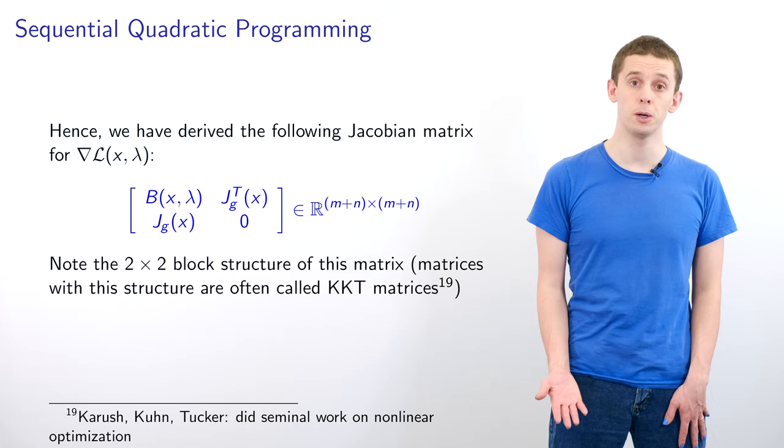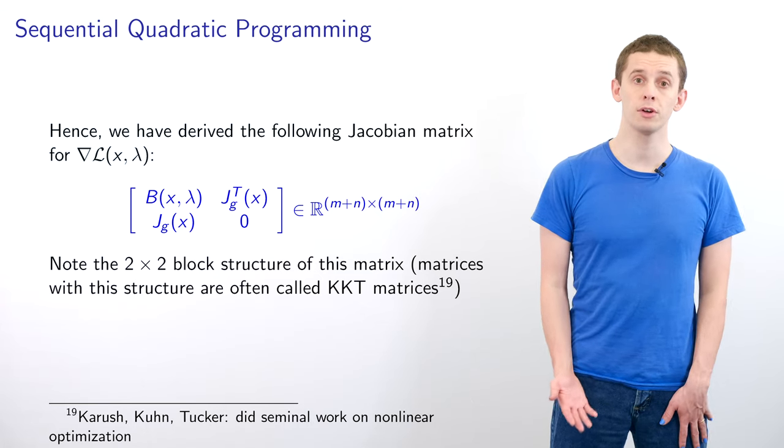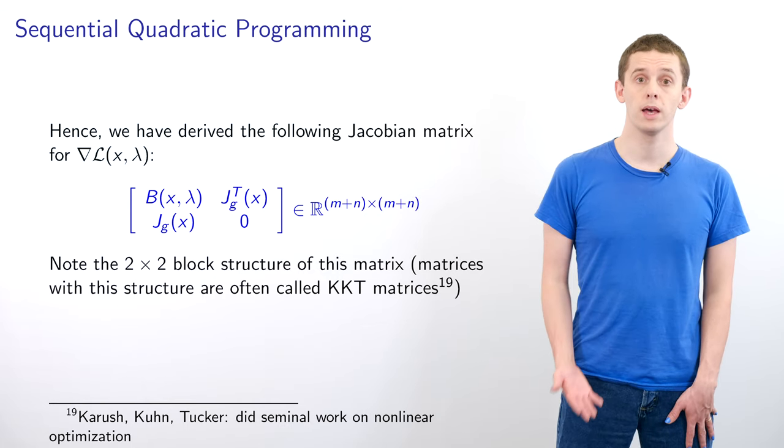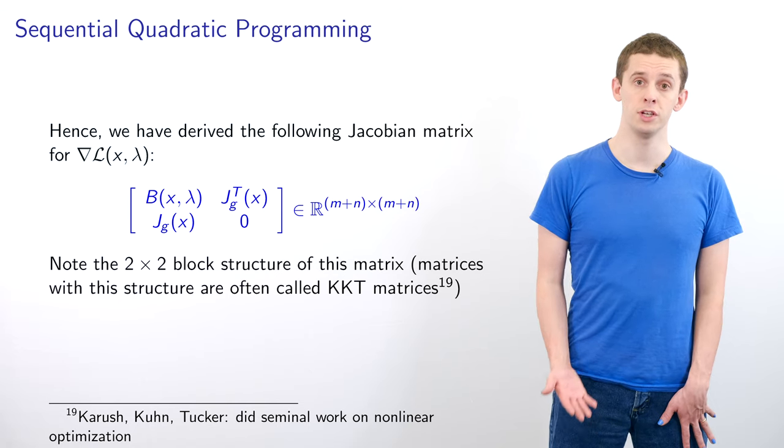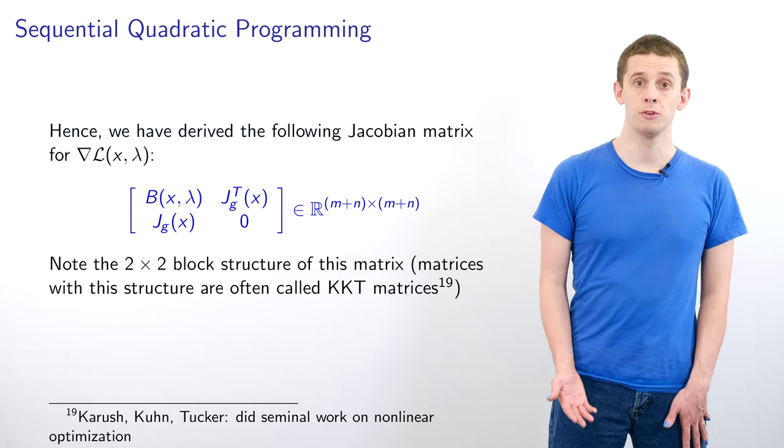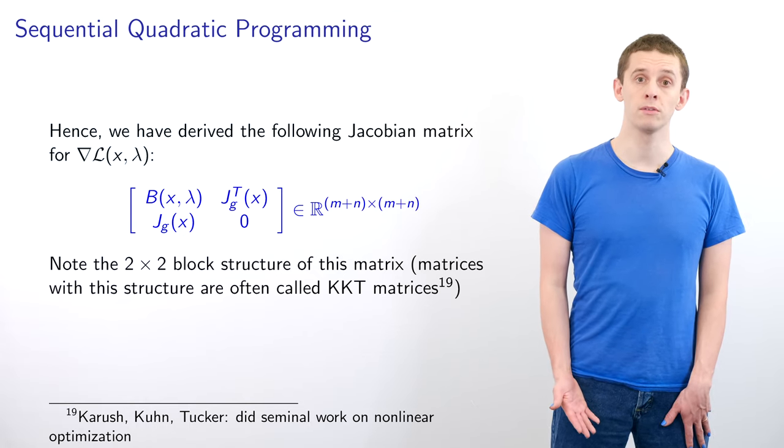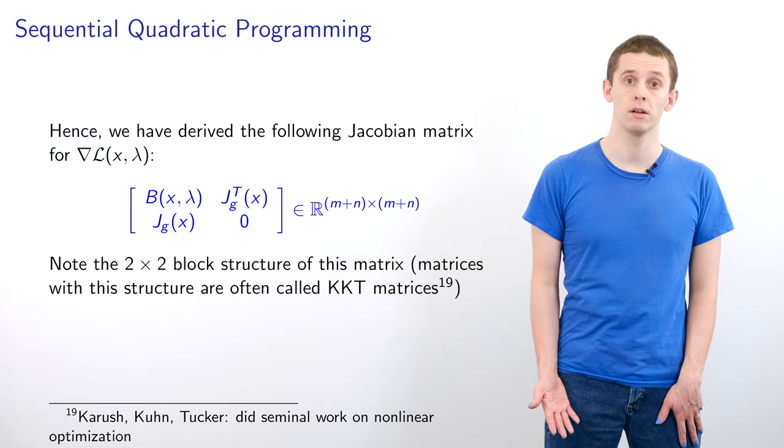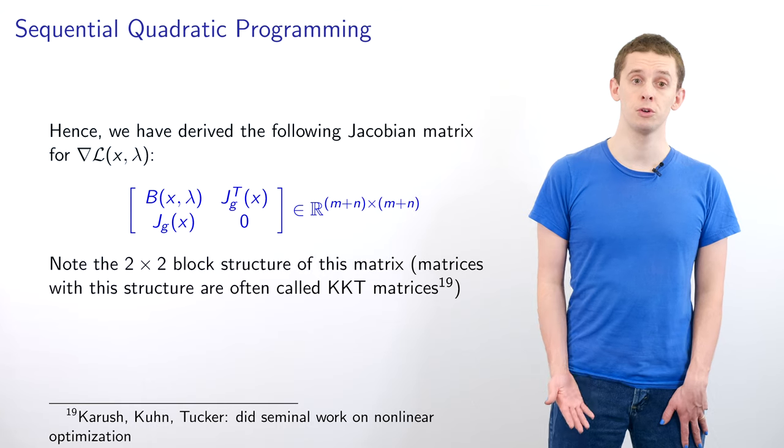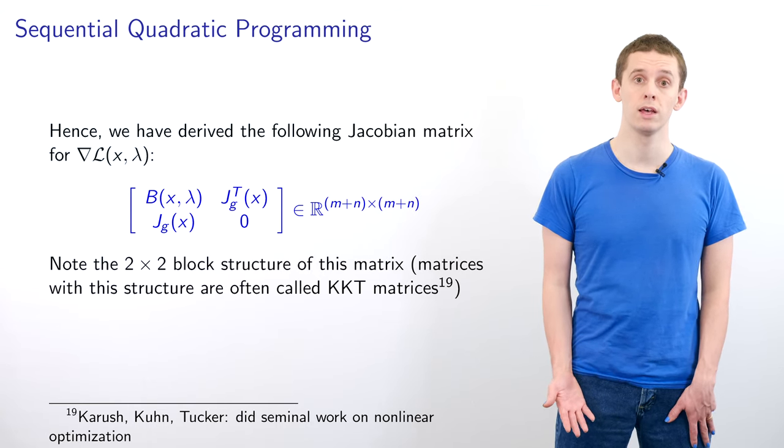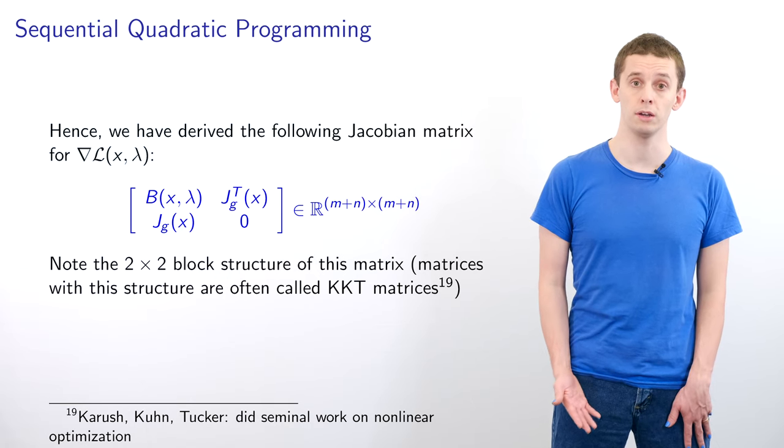We've now derived the complete form of the Jacobian of the gradient of L and it will have a 2×2 block structure. The components will be B(x, λ), the Jacobian of g transpose x, the Jacobian of g x, and 0. Overall, this will give us an (m+n)×(m+n) square matrix. Matrices of this form are often referred to as KKT matrices after Karush, Kuhn and Tucker who did seminal work in nonlinear optimization.